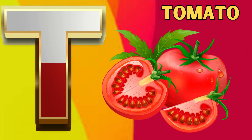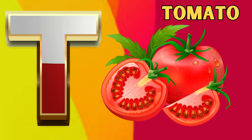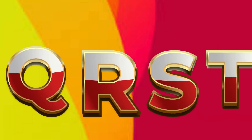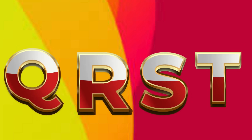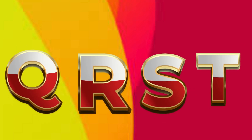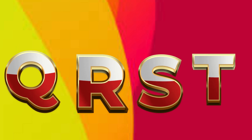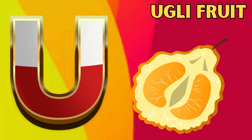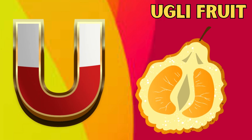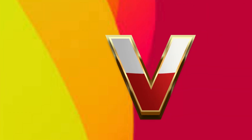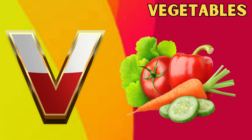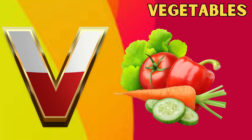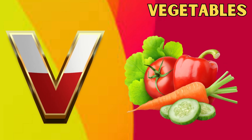T is for tomato, tuh, tomato. U is for ugly fruit, uh, ugly fruit. V is for vegetables, vh, vegetables.